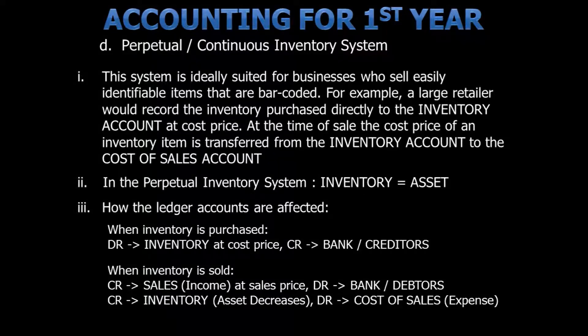In order for a business to keep track of its inventory — that is to say the goods that it sells — accounting has developed two different systems to make the process a bit more manageable. Firstly, let's have a look at the perpetual or continuous inventory system.